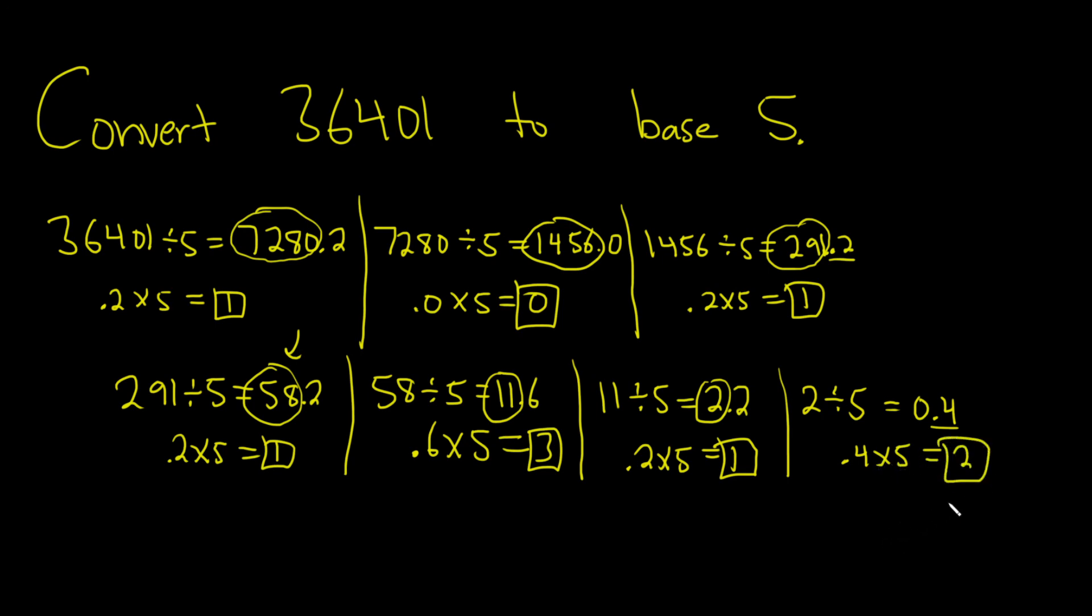All right. Now you write it backwards. 2, 1, 3, 1, 1, 0, 1. And then don't forget to put the word 5 here. And this would be the base 5 representation of this number here in base 10. That's it.